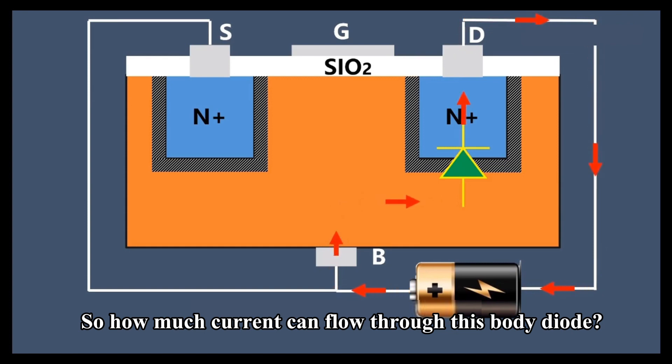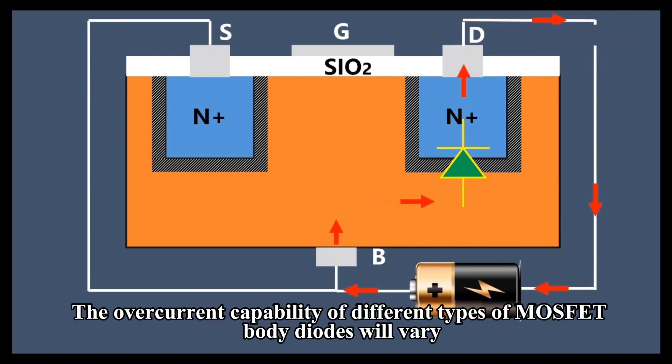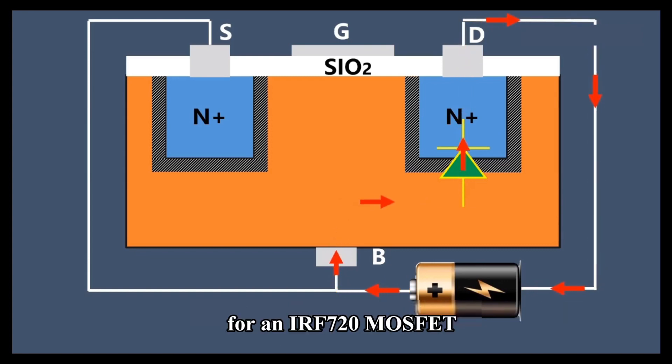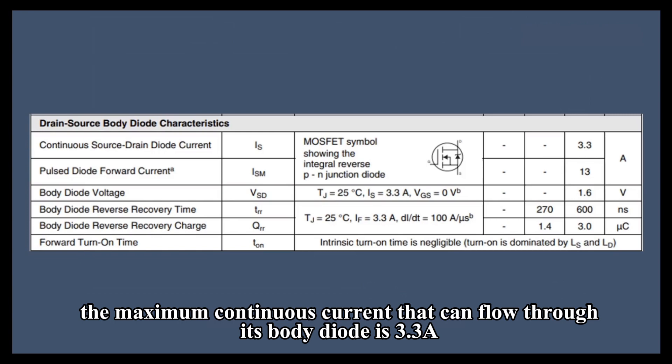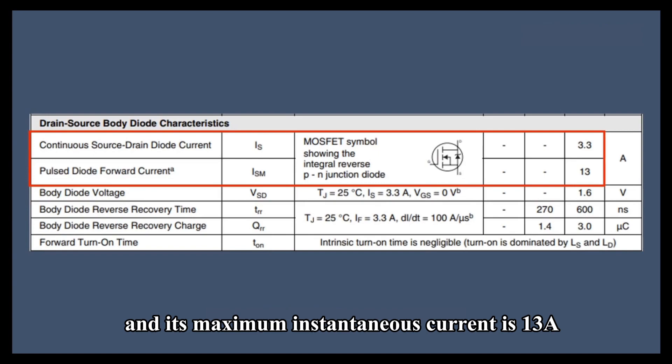So how much current can flow through this body diode? The overcurrent capability of different types of MOSFET body diodes will vary. For example, for an IRF-720 MOSFET, according to its datasheet, the maximum continuous current that can flow through its body diode is 3.3 amps and its maximum instantaneous current is 13 amps.